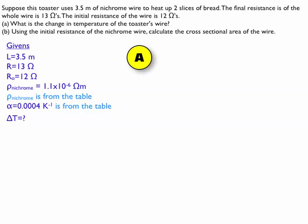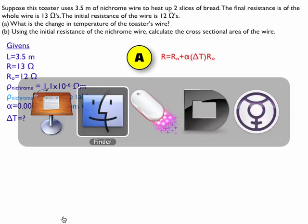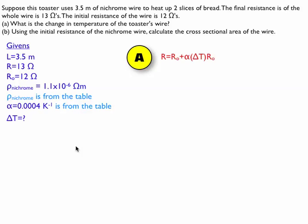Now there's only one formula, part A, that has the change in temperature in it that we're going to need. That's resistance. There is a resistivity formula, but that's not going to really help us in this case.